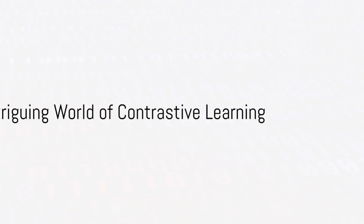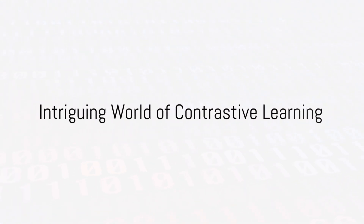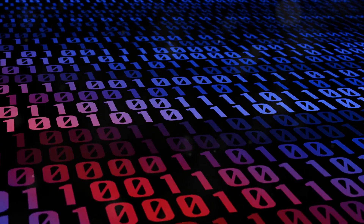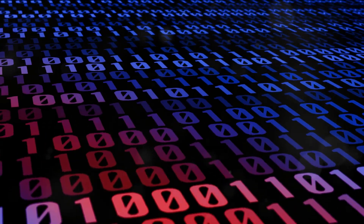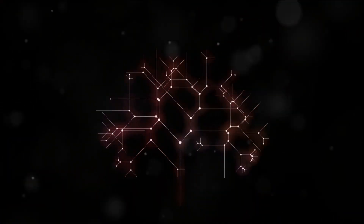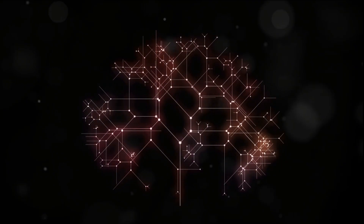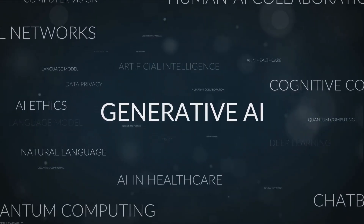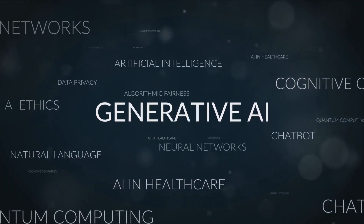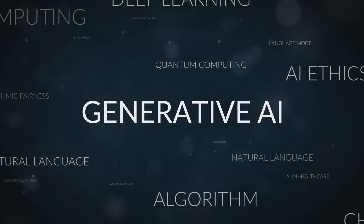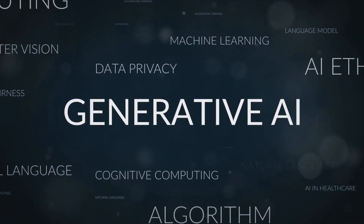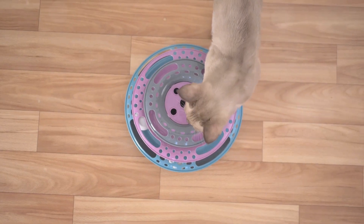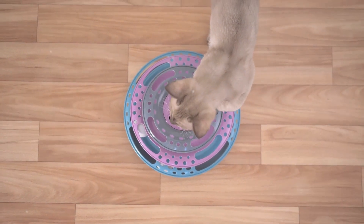Have you ever wondered how our brain differentiates between a cat and a dog, or between an apple and an orange? It's a fascinating process, isn't it? This is precisely the realm where contrastive learning comes into play. A type of machine learning, contrastive learning paves the way for models to discern differences and similarities between various types of data. Just as our brain effortlessly identifies a cat from a dog,